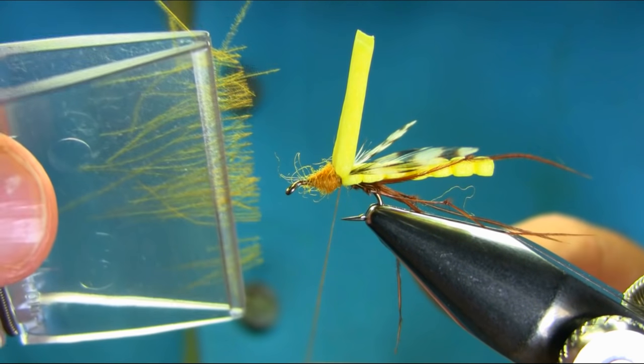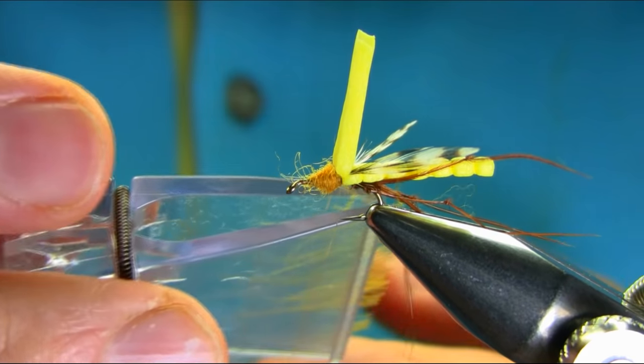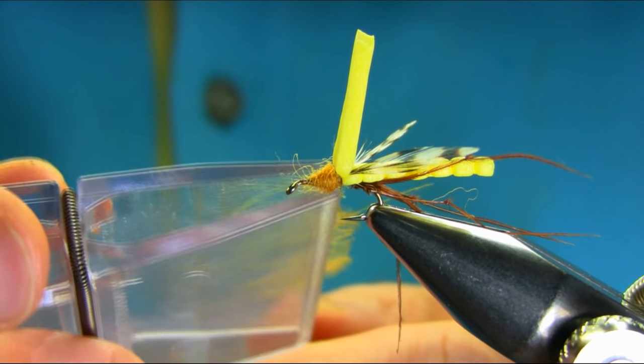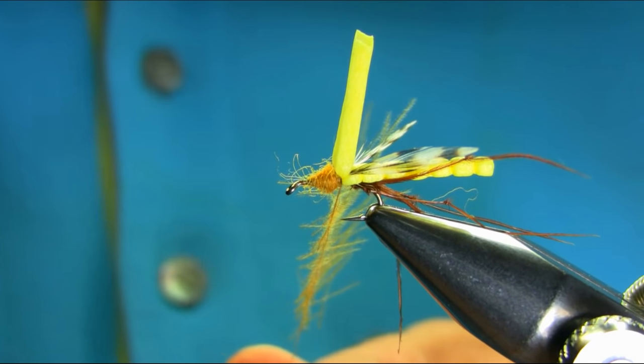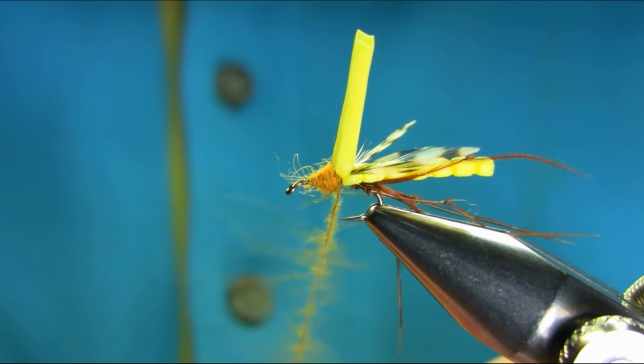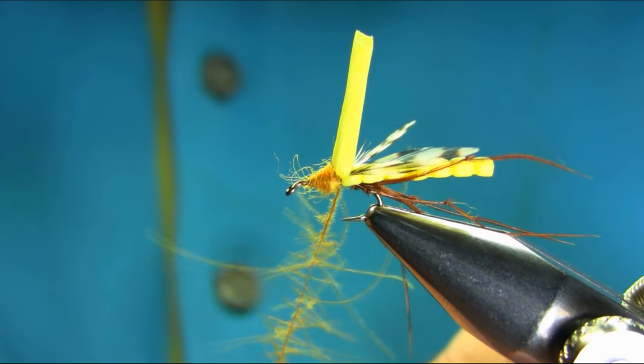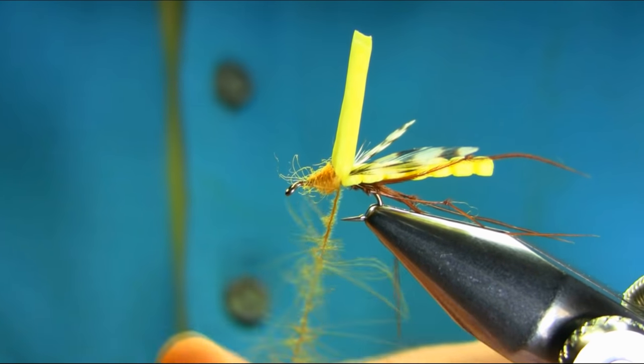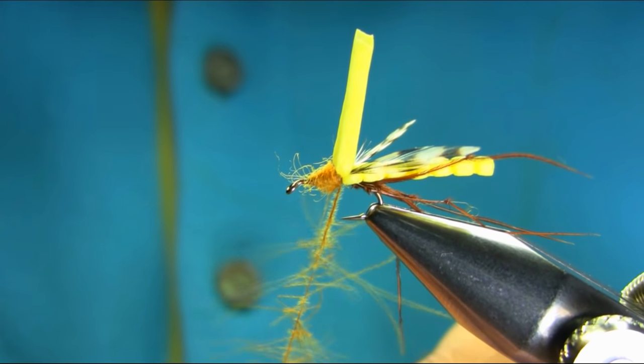So as you can see, CDC, I cut it in two. And the CDC, you can use any color, but I'm using a golden olive color. I really don't want too much CDC here, just a little bit.